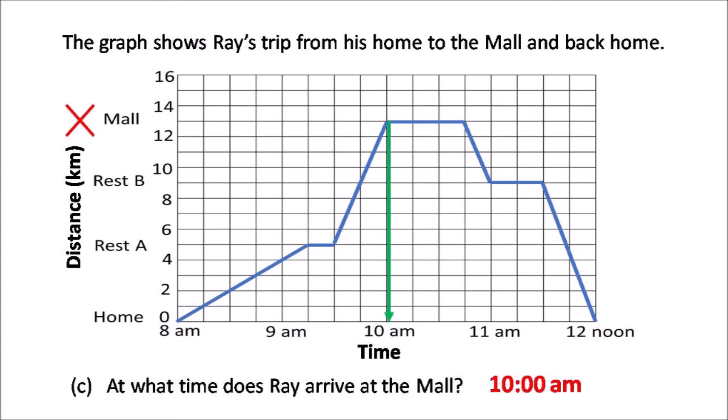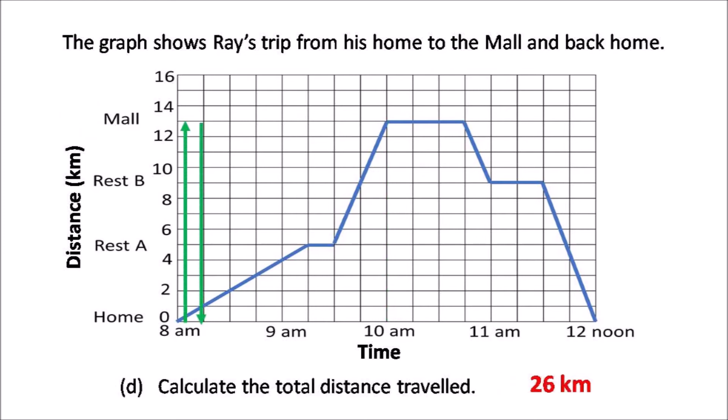C, at what time does Ray arrive at the mall? So you look down where he arrived at the mall, and that would be 10 a.m., where that green line comes down. And calculate the total distance travel. Now he went to the mall, and then he came back from the mall, so it's 13 plus 13, 26.